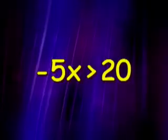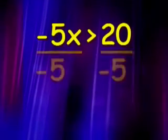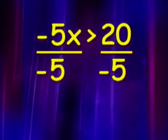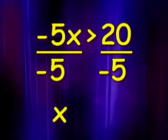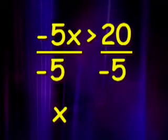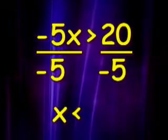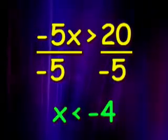If we had to solve an inequality such as negative 5x is greater than 20, we would have to divide both sides by negative 5 to isolate the x. Now, remember the rule. Since we're dividing both sides by a negative number, we have to reverse the sign, and our solution is x is less than negative 4.